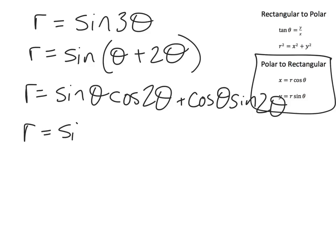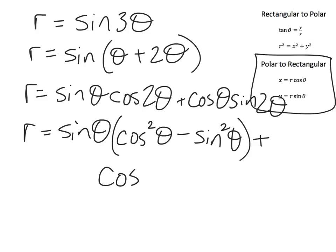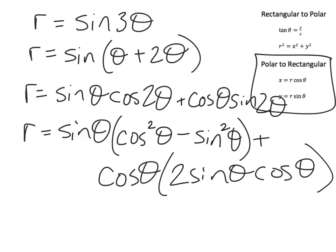And I can say, okay, so this is sine theta. Cosine 2 theta, I've got different options. I'm going to go ahead and use the version cosine squared minus sine squared. And then this plus, this becomes cosine theta times 2 sine theta cosine theta. And now I need to distribute, distribute this through the first one. And then notice when I do the second part down here, I end up with a cosine squared times sine.